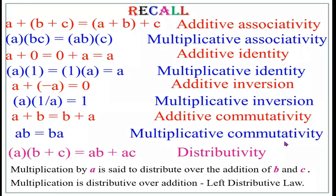This is known as the left distributive property. Similarly, we have the right distributive property. These are the properties we are going to discuss in group theory, rings, and fields. In group theory, we will use closure, associativity, identity, inverse, and commutativity. The distributive property will be used in rings and fields only.